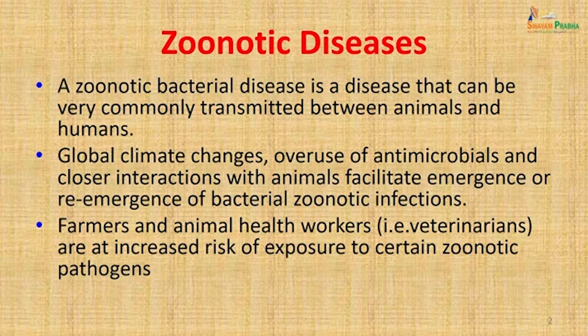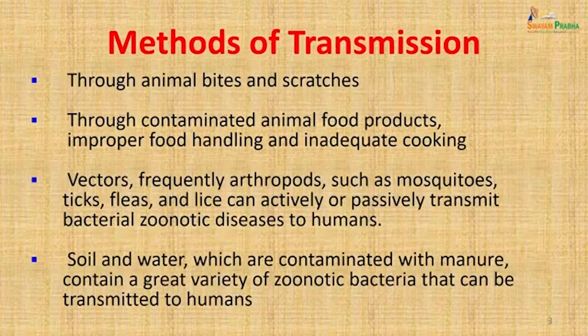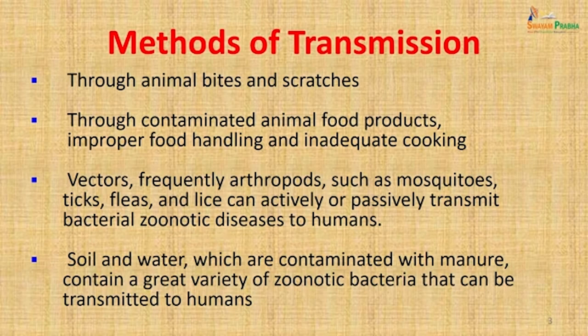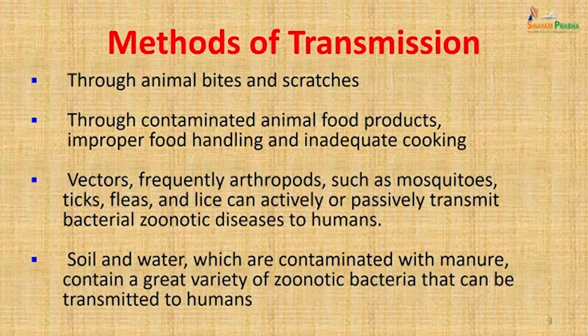Farmers and animal health workers, especially veterinarians, are at increased risk of exposure to certain zoonotic pathogens. These pathogens can be transmitted through animal bites and scratches, contaminated animal food products, improper food handling, and inadequate cooking. Vectors such as mosquitoes, ticks, fleas, and lice can actively or passively transmit bacterial zoonotic diseases. Soil and water contaminated with manure can also transmit zoonotic diseases to man.